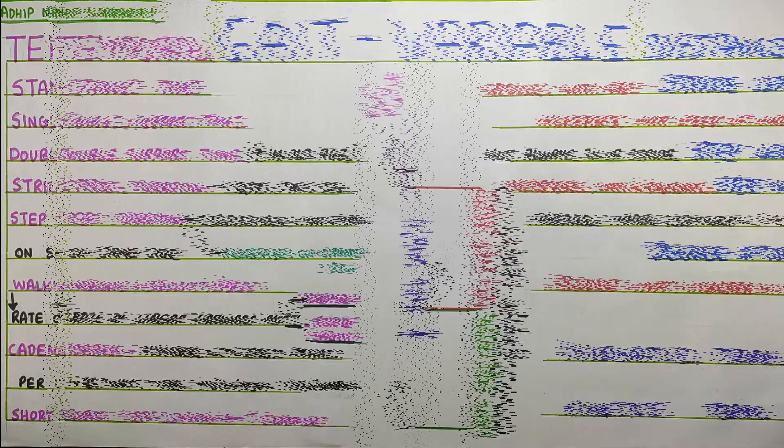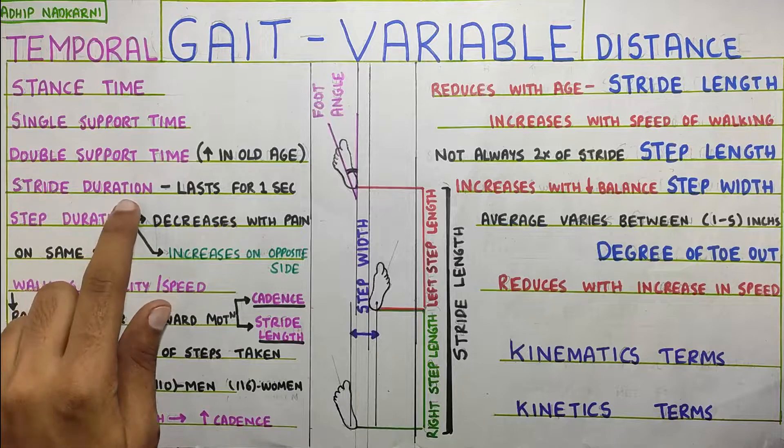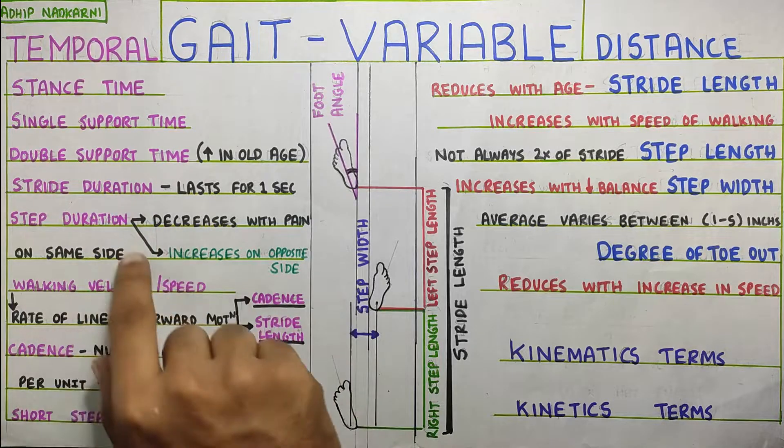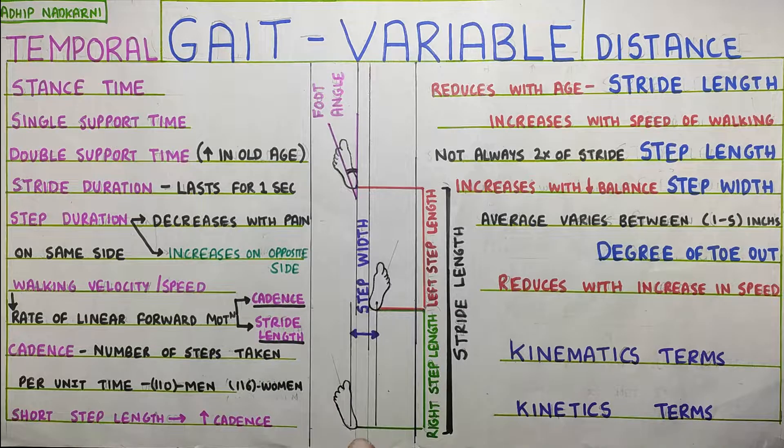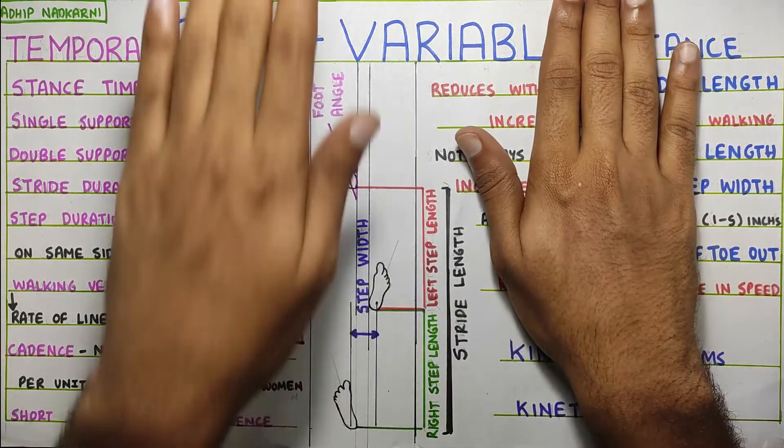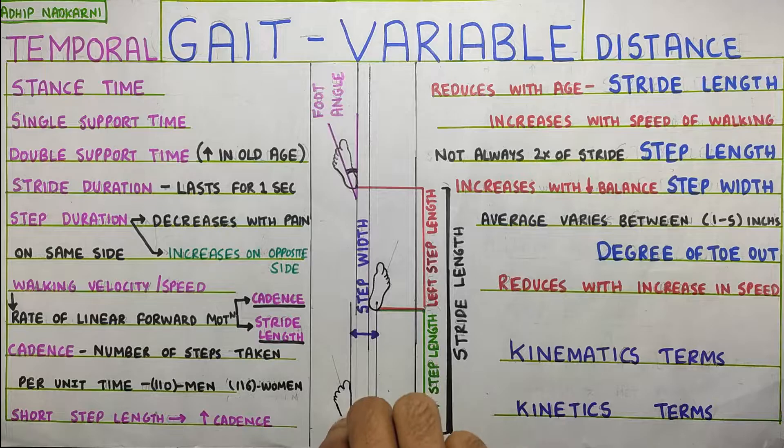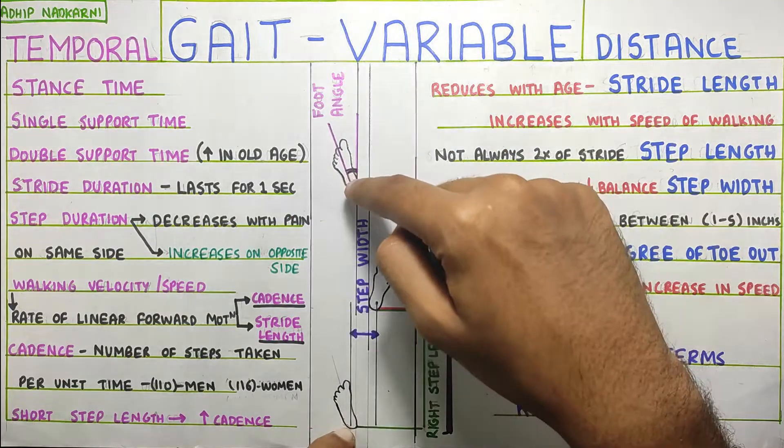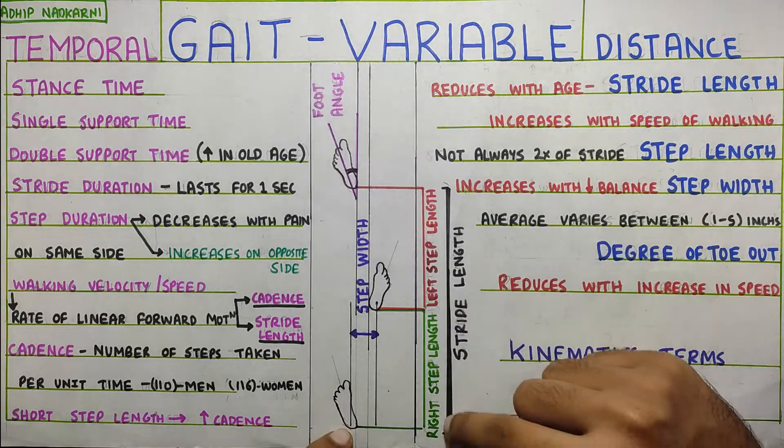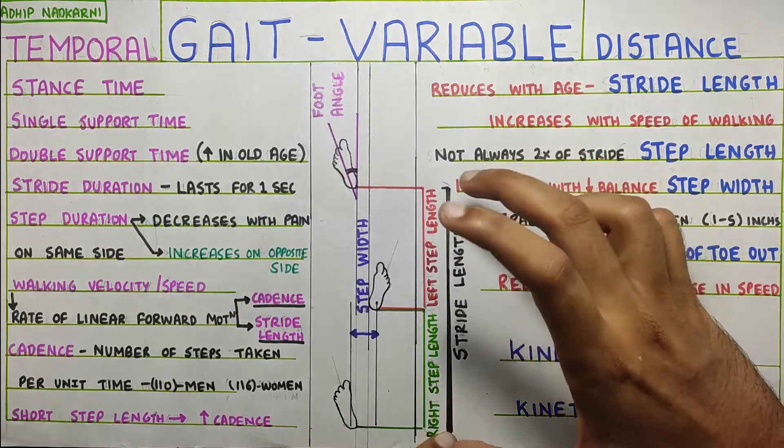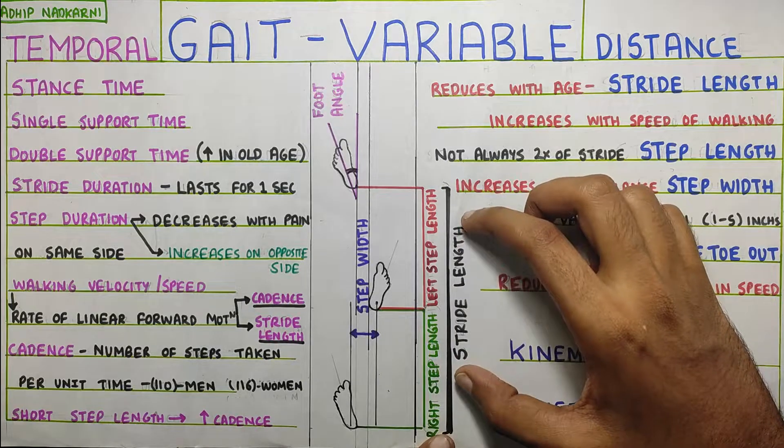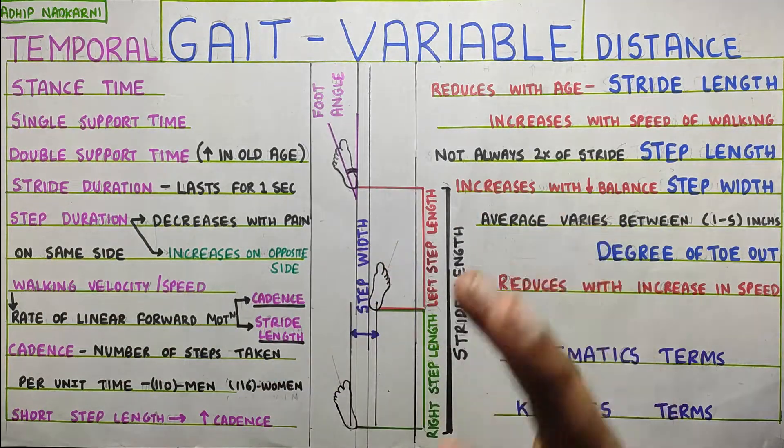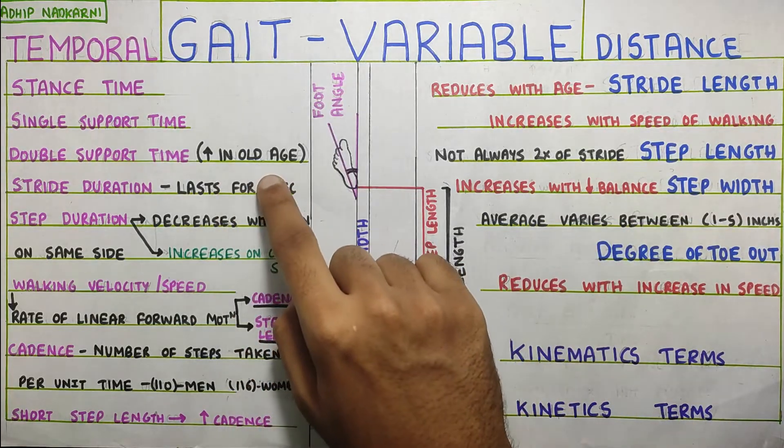Then next is the stride duration. That is the amount of time that you take to take one stride. So, basically one stride is from one step, two step and this one. So, if you are standing here, this is your one stride over here. From one heel strike to the heel strike of the same foot again. So, this is your stride length and amount of time taken to cover this much length is your stride duration. And this lasts in an average people to about one second.